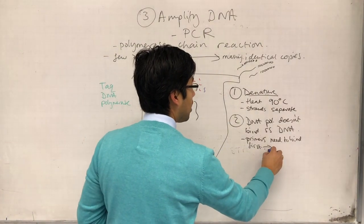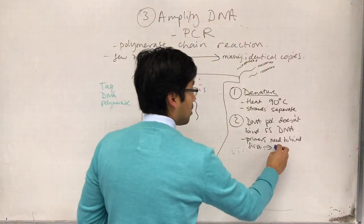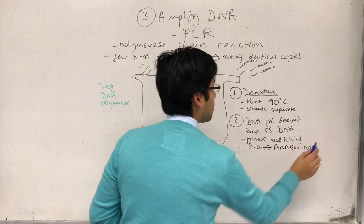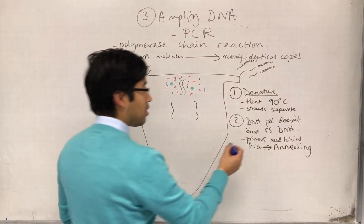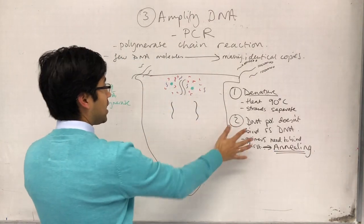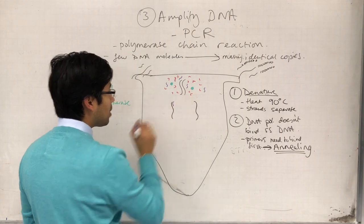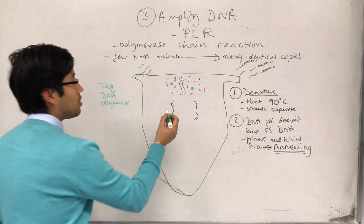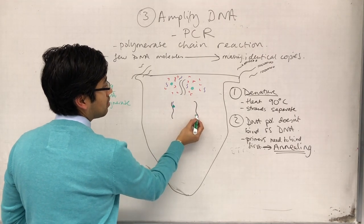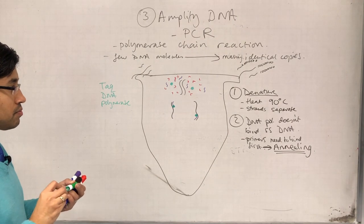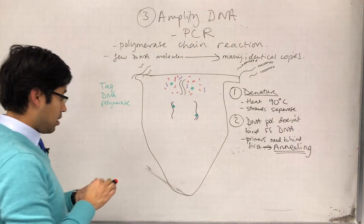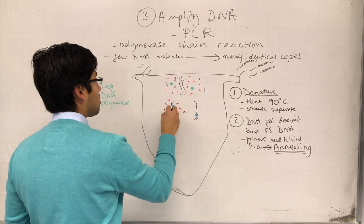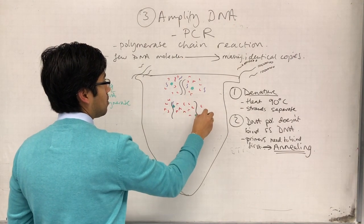Okay, and so, we achieve this by cooling the mixture. All right, and so, this stage is called the annealing stage. The annealing stage where the primers bind. Okay, so, second stage, primers bind. Primer binds there. Primer binds there. And when the primers bind, it allows the TAQ polymerase to bind. Okay. And remember the little nucleotides are still there.